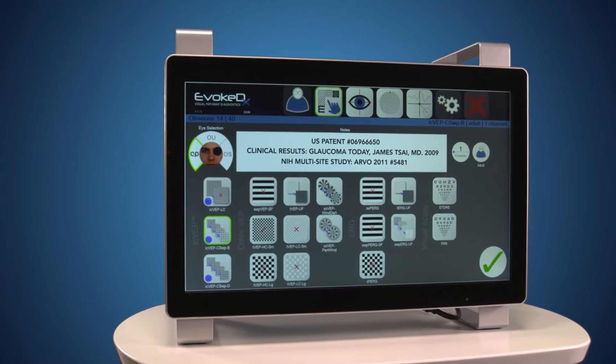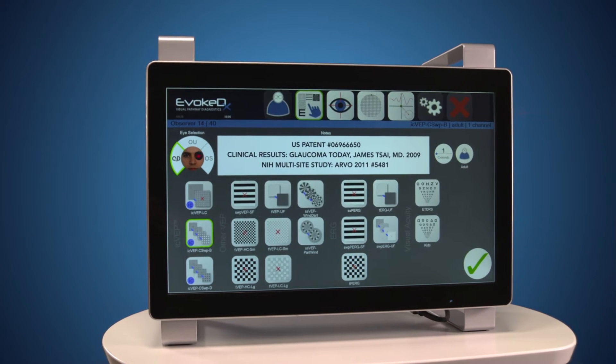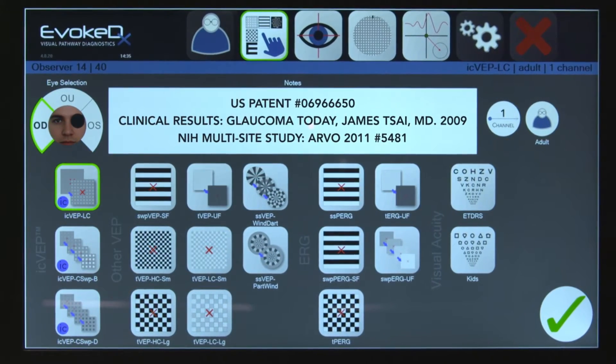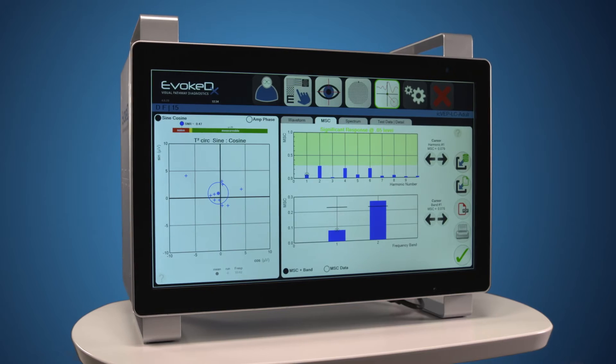Evoke DX has 16 VEP and ERG test conditions, including three patented isolated check VEP tests designed to elicit responses from the M-cell pathways.